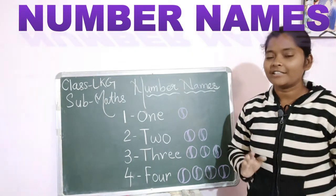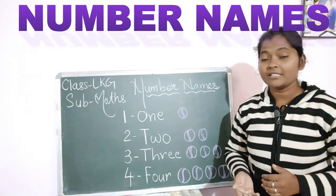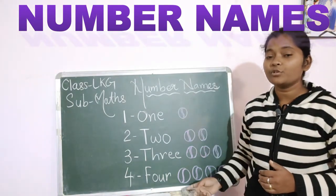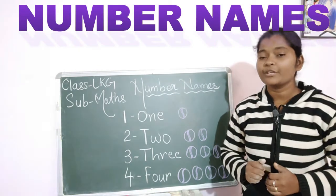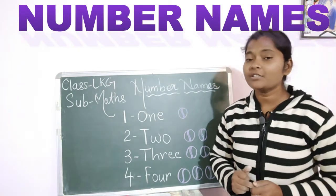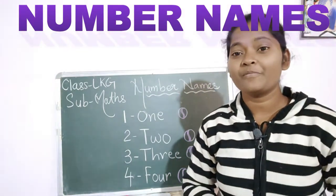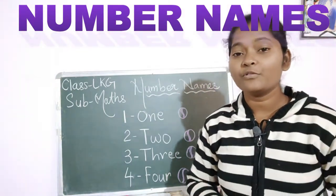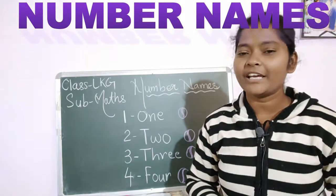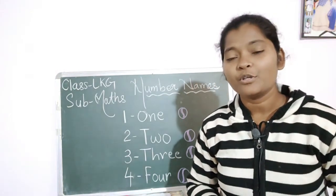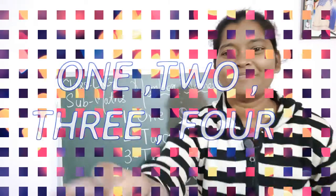So children, like this you learn and practice the number names from 1 to 4 today at your home. My dear kids, today after learning the number names from 1 to 4, let's write today's spelling of 3 and 4. So my dear kids, take out your maths copy.